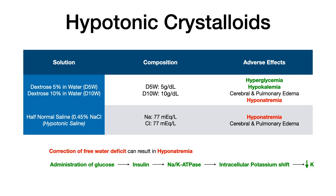In the case of dextrose, you'll see a little number after the D — so it'll either be D5W or D10W, just telling you the percentage of dextrose in water. D5W has 5 grams per deciliter, D10W has 10 grams per deciliter. Half normal saline will usually be written out as 0.45% sodium chloride, and in half normal saline there are 77 milliequivalents per liter of sodium as well as chloride.